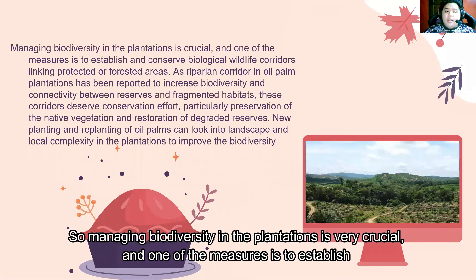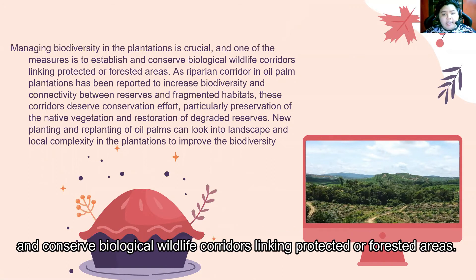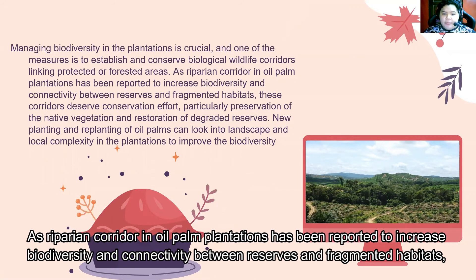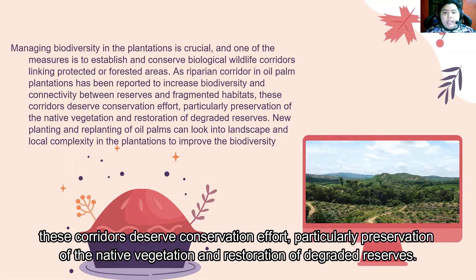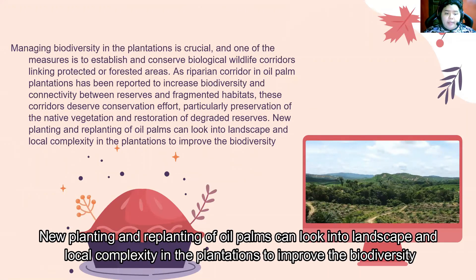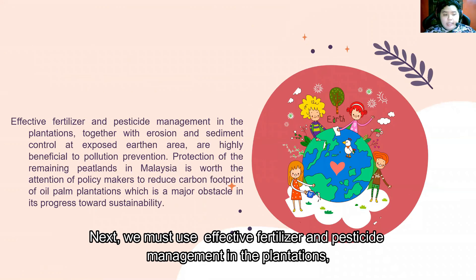To overcome these issues, managing biodiversity in the plantation is very crucial. One measure is to establish and conserve biological wildlife corridors linking protected or forested areas, as riparian corridors in oil palm plantations have been reported to increase biodiversity and connectivity between reserves and fragmented habitats. New planting and replanting of oil palm can also look into landscape and local capacity to improve biodiversity.